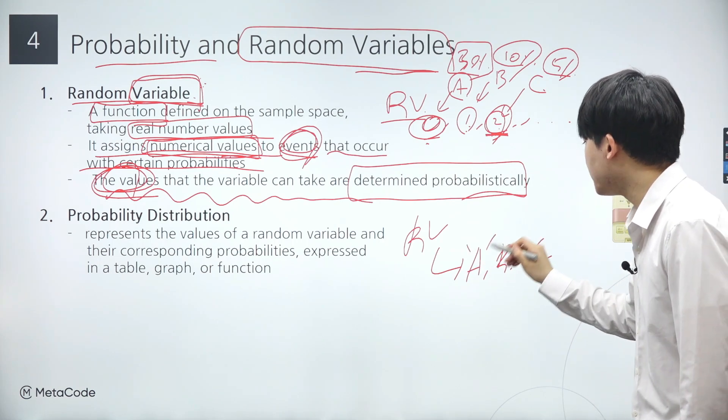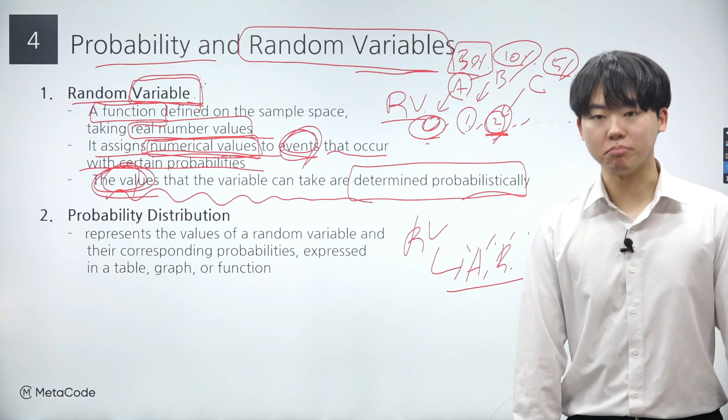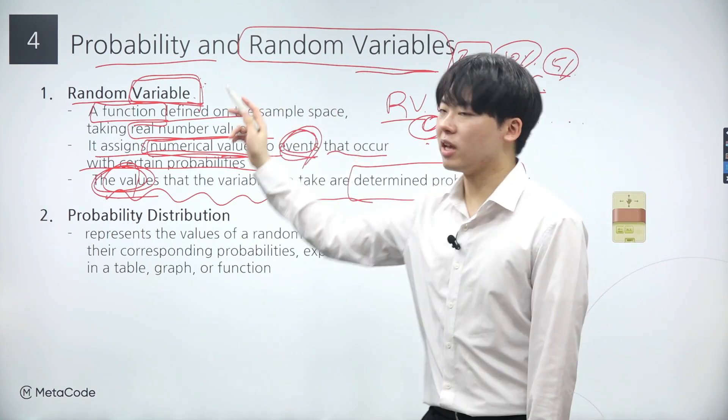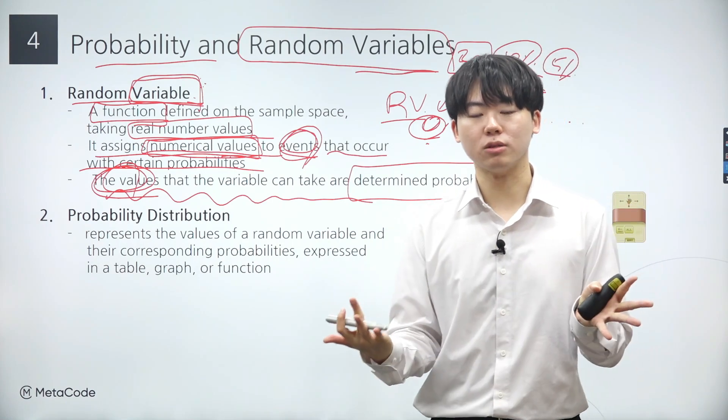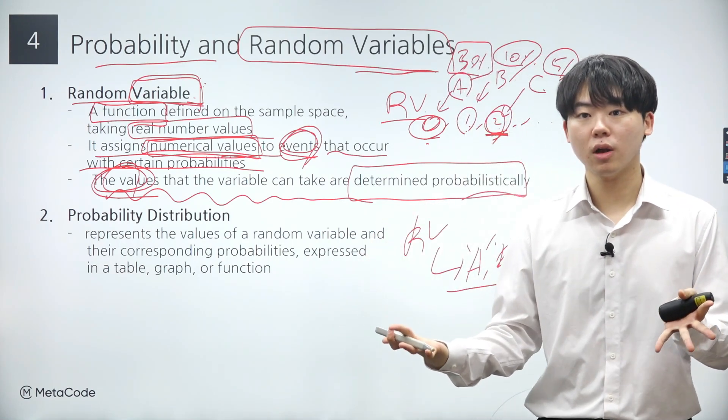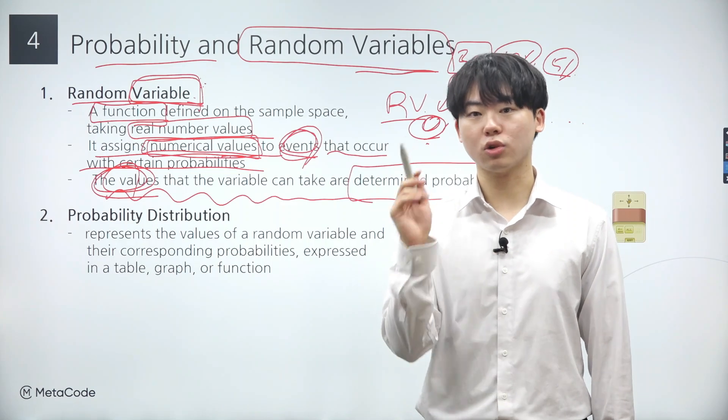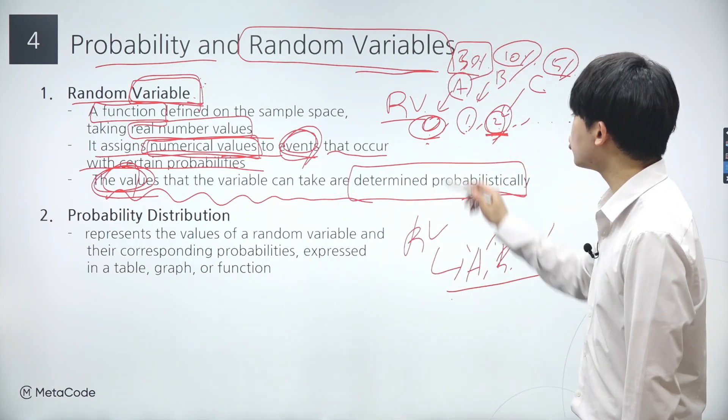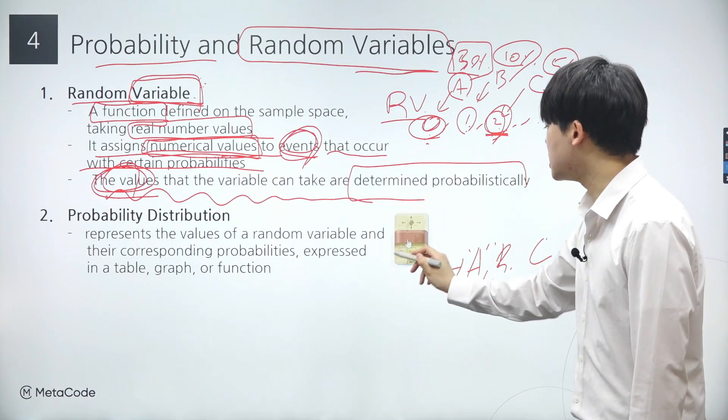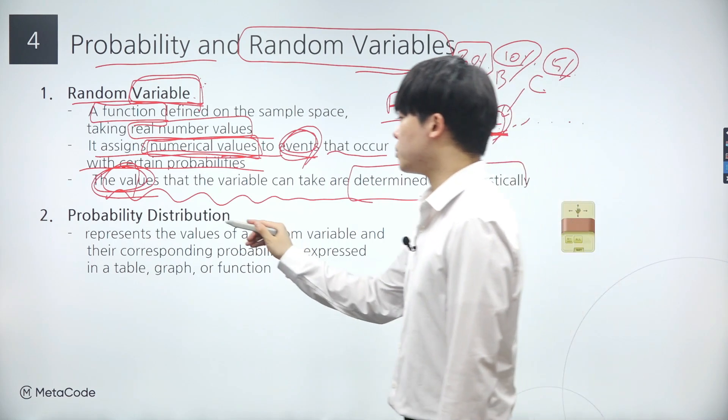Theoretically, we could define a random variable as a function that returns symbols instead of real numbers. However, for practical applications such as creating formulas, functions, and graphs, using real numbers is essential. If a random variable were to return letters instead of numbers, it would complicate these applications. Therefore, random variables typically take an event as input and output a real number.